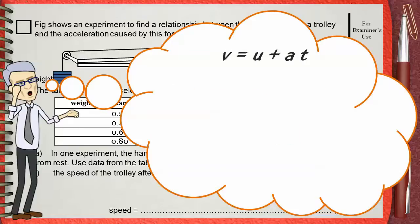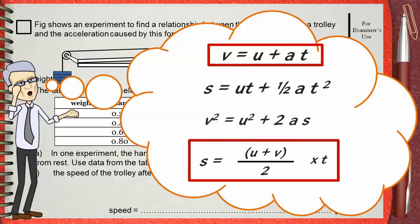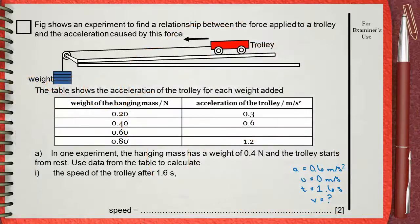In this starting level of physics, we don't need more than v equals u plus at, and s the distance equals u plus v divided by 2 times the time. This question asks for the final speed v. That's why we need v equals u plus at.